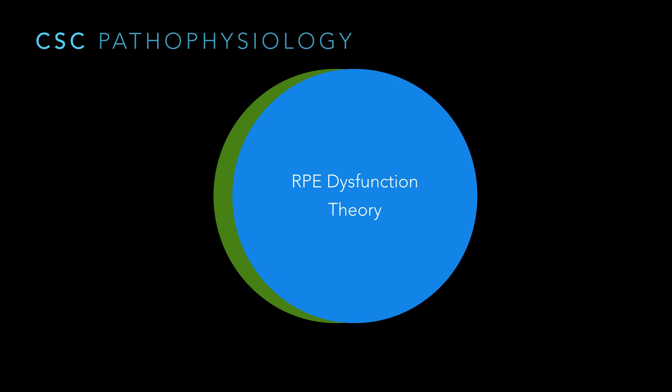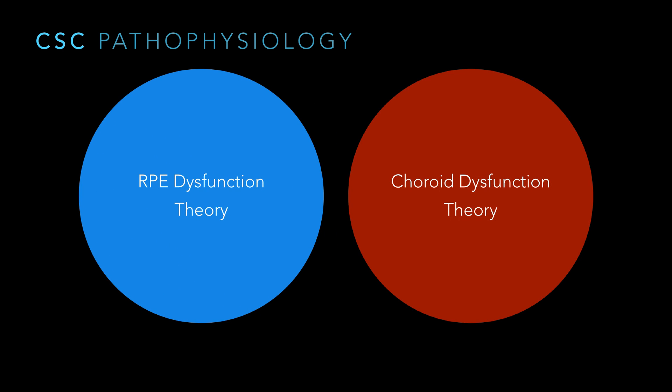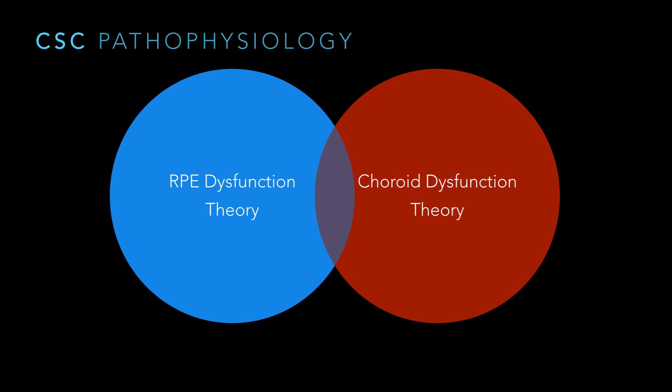Gass described this dysfunction of the retinal pigment epithelium — the layer underneath the retina — that was not able to hold back fluid coming forward. Now a lot of people think of this as being a choroidal disease, and maybe the RPE is still related pathophysiologically, but more than likely it's sort of an innocent bystander that gets implicated later on when the disease becomes more chronic.